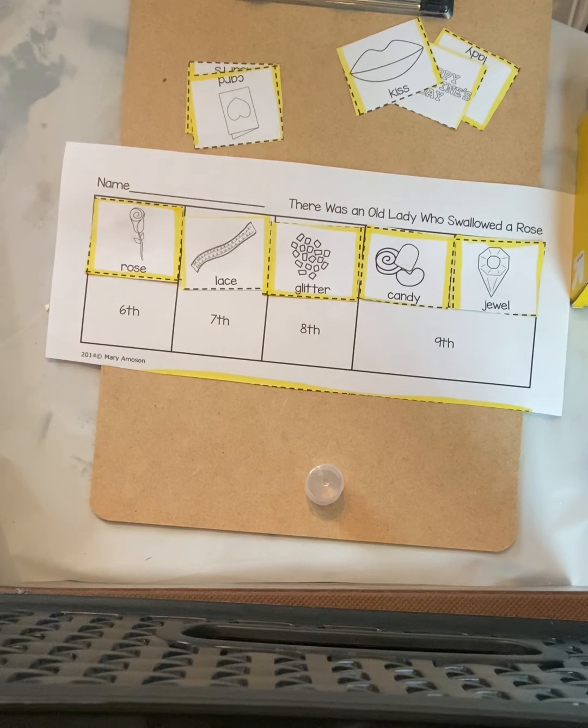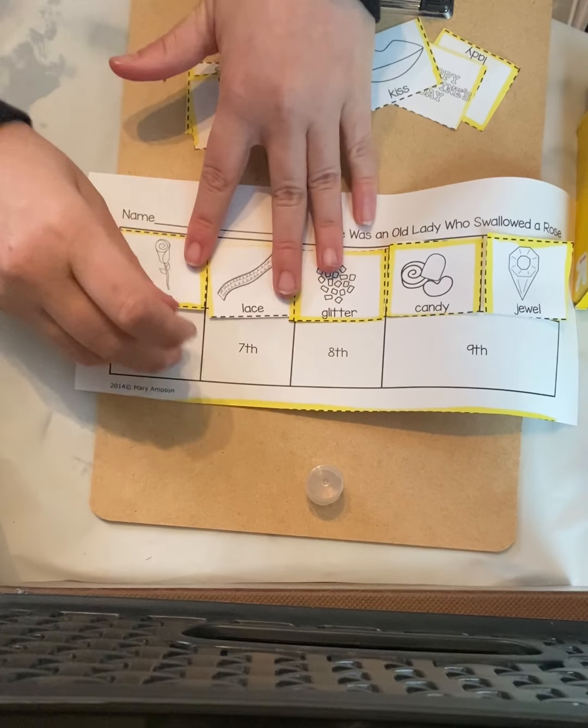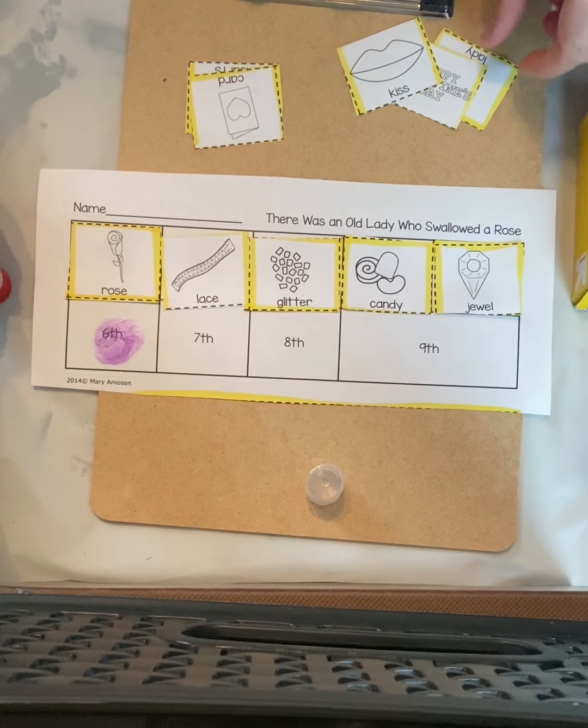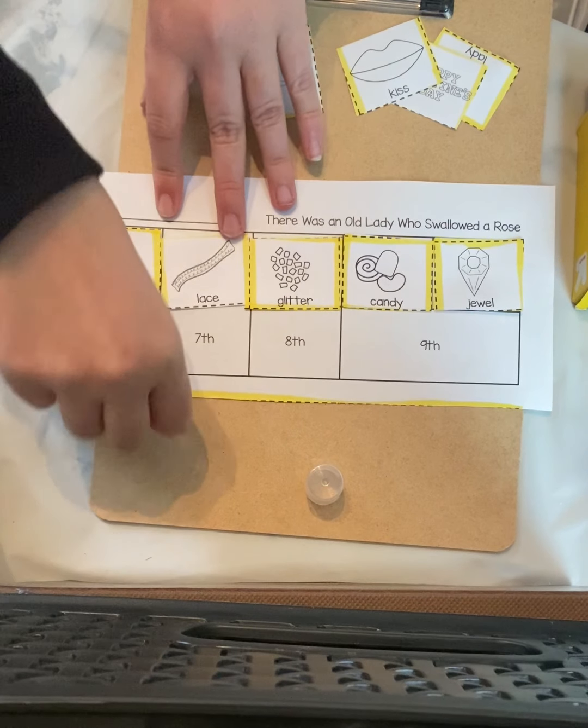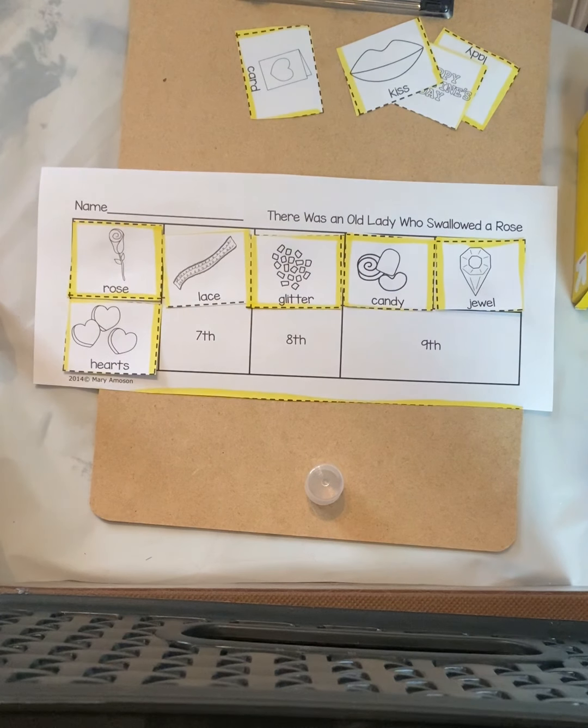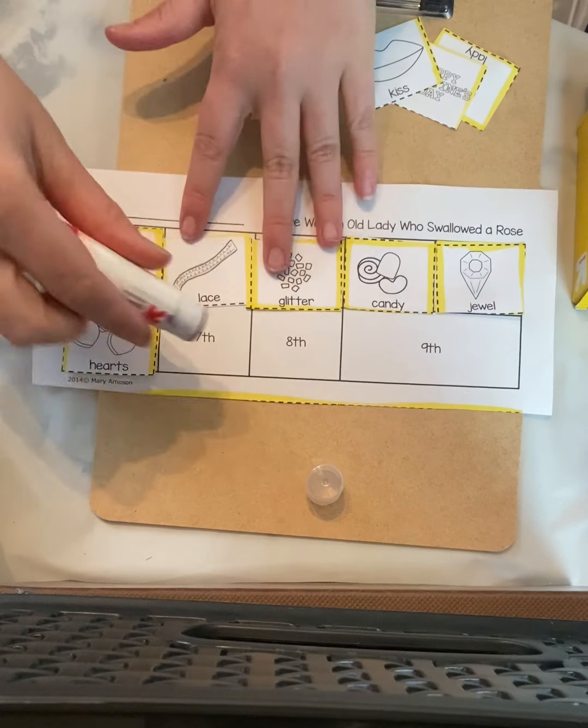What'd she swallow after she swallowed the jewel? She swallowed some hearts. Can you find the hearts, friends? She swallowed some hearts. And after the heart, she swallowed... Let's see. She swallowed... That's right. She swallowed a card.